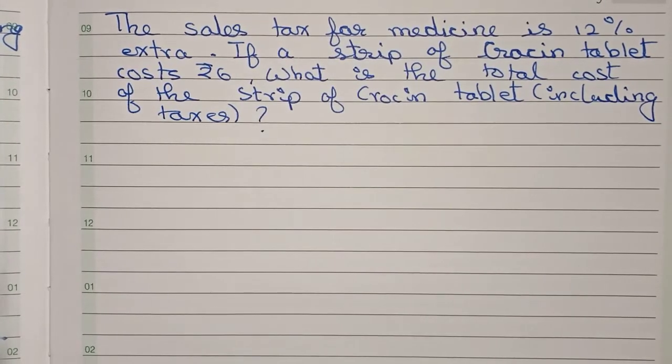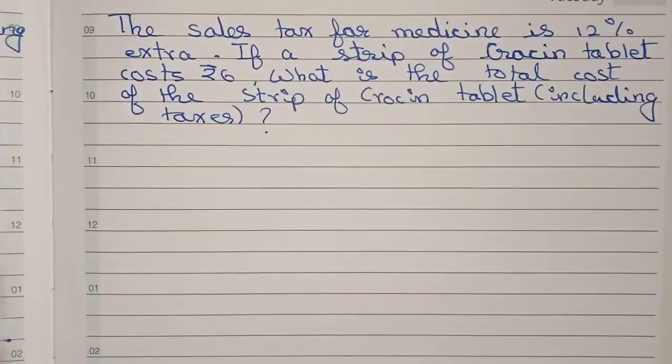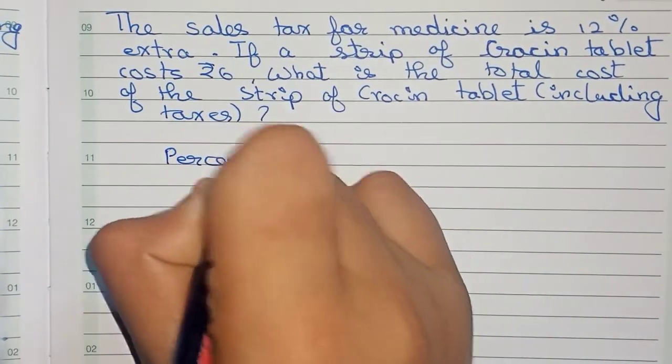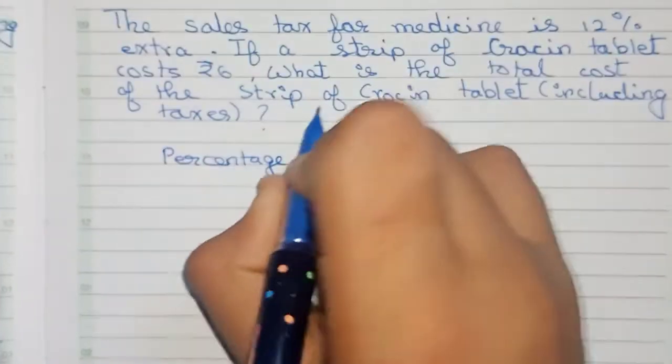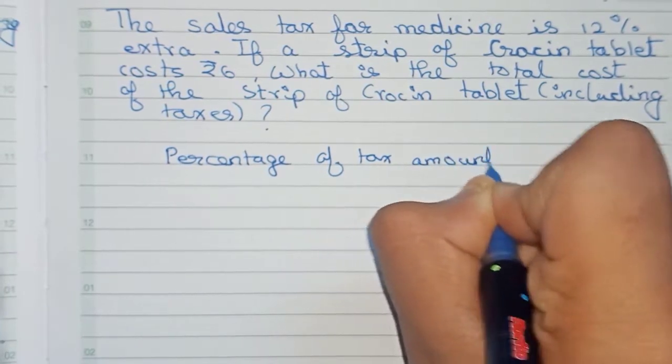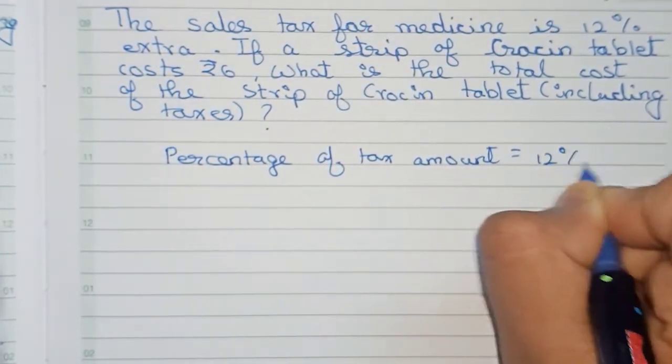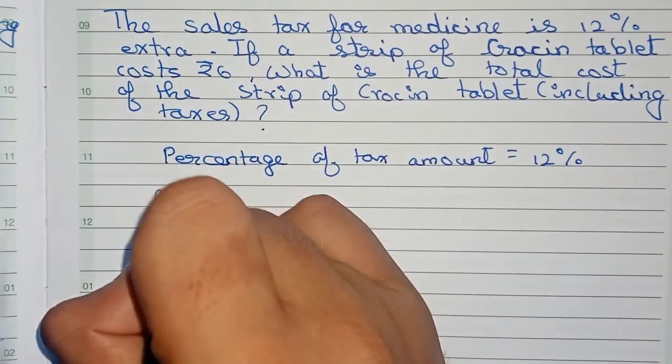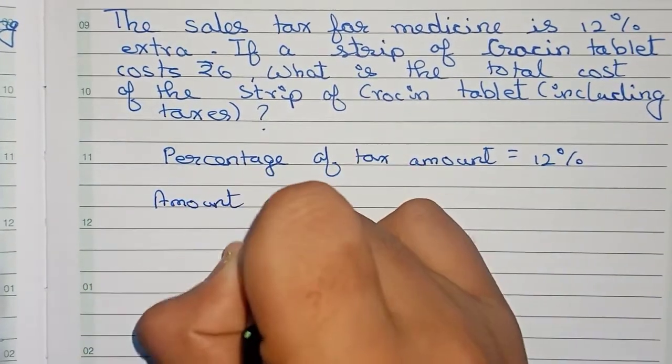So this is our question. Now let's solve this. First, you write percentage of tax amount equals to 12%. Now you write amount of Crocin tablet strip, that means the price of Crocin tablet strip equals to rupees 6.